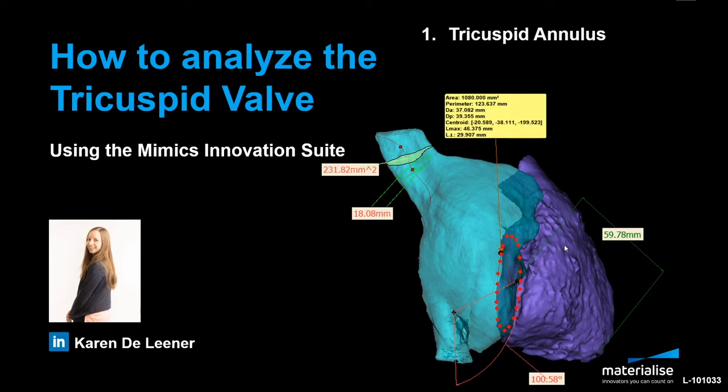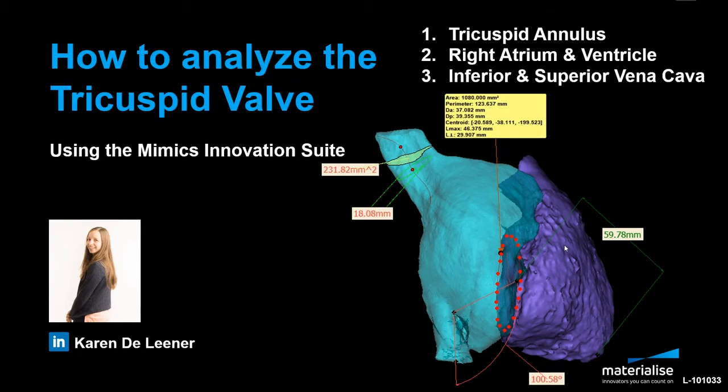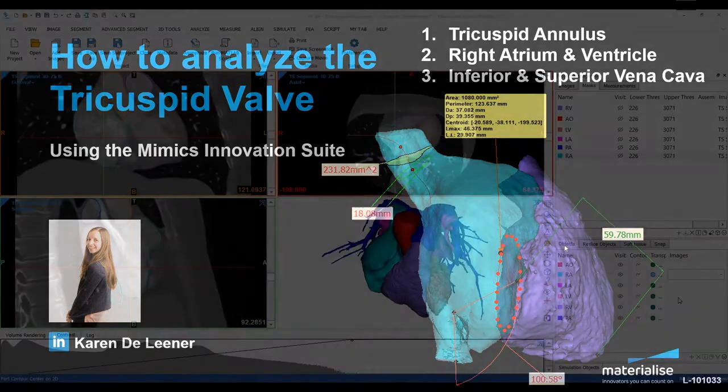First of all, we will analyze the tricuspid annulus. Then the right atrium and ventricle. And finally, the inferior and superior vena cava.